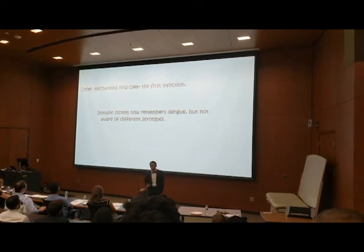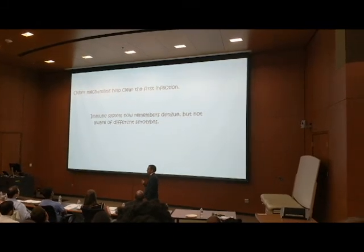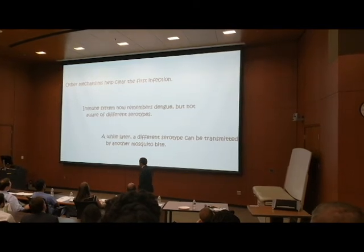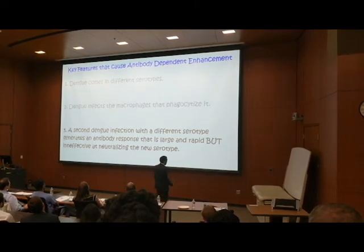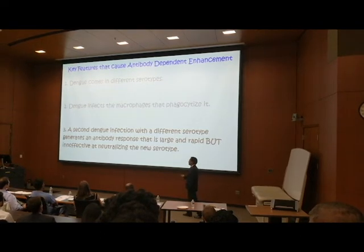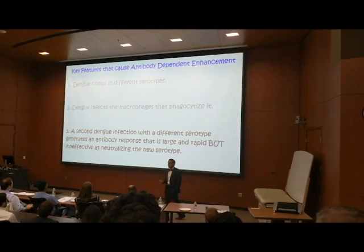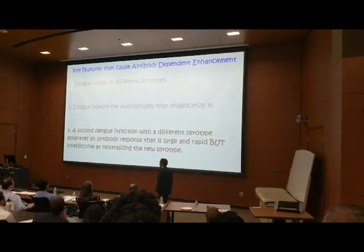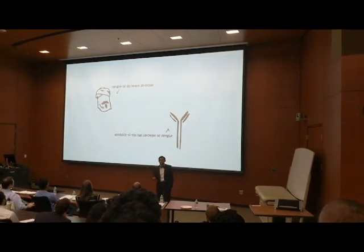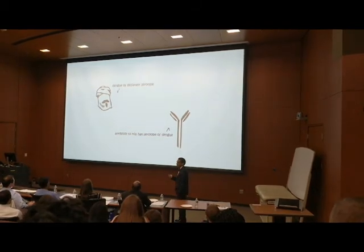But now your immune system has memory, though it's not aware that different serotypes exist. All it knows is that something wearing a hat caused a lot of trouble. A while later, you're exposed to the next serotype — this is the third reason. A second Dengue infection with a different serotype, a different hat, generates a memory antibody response that is large and rapid, but actually ineffective against the new serotype. This new Dengue is a different serotype because it's wearing a turban instead of a top hat.